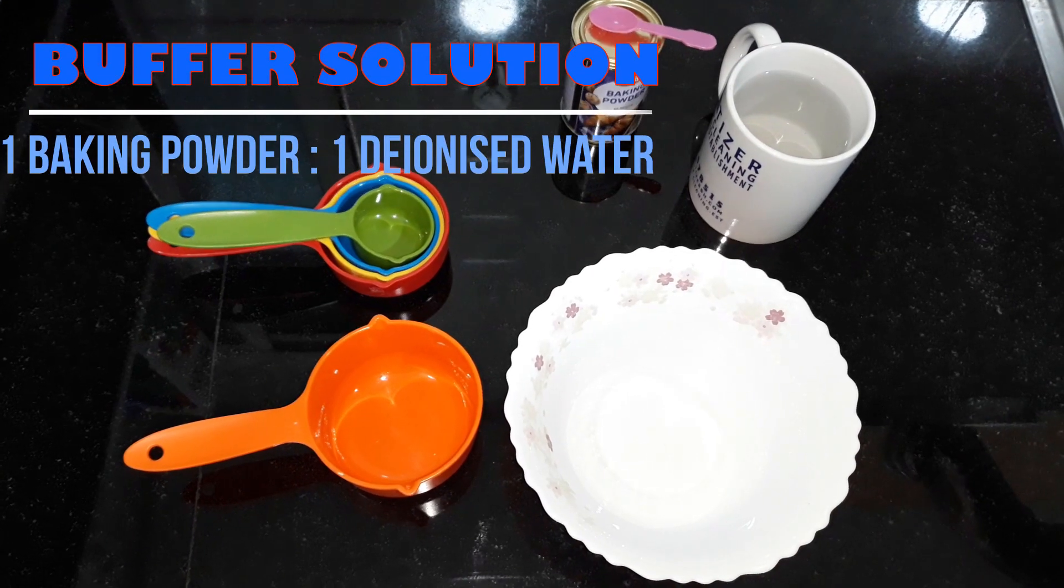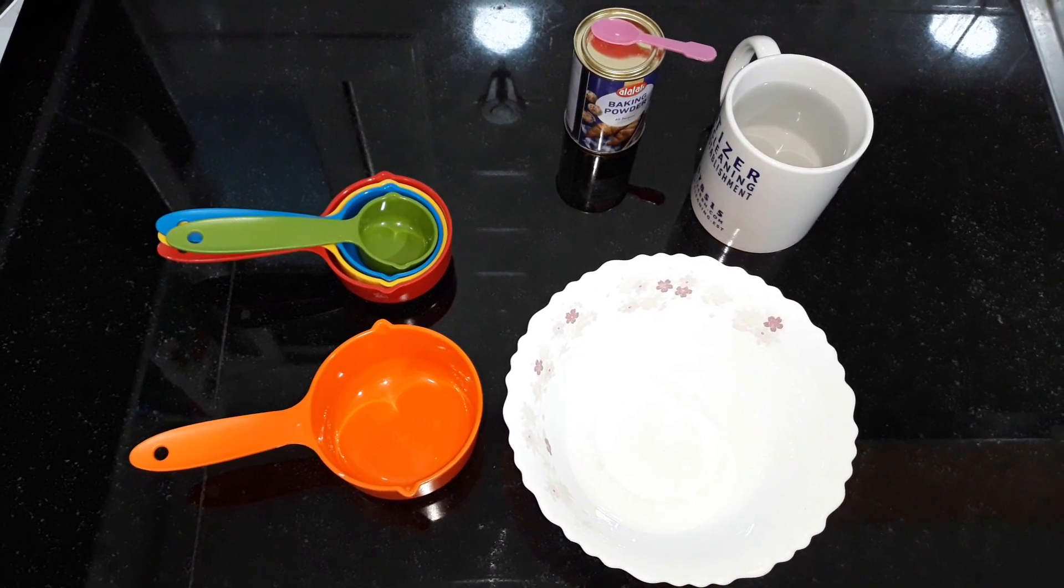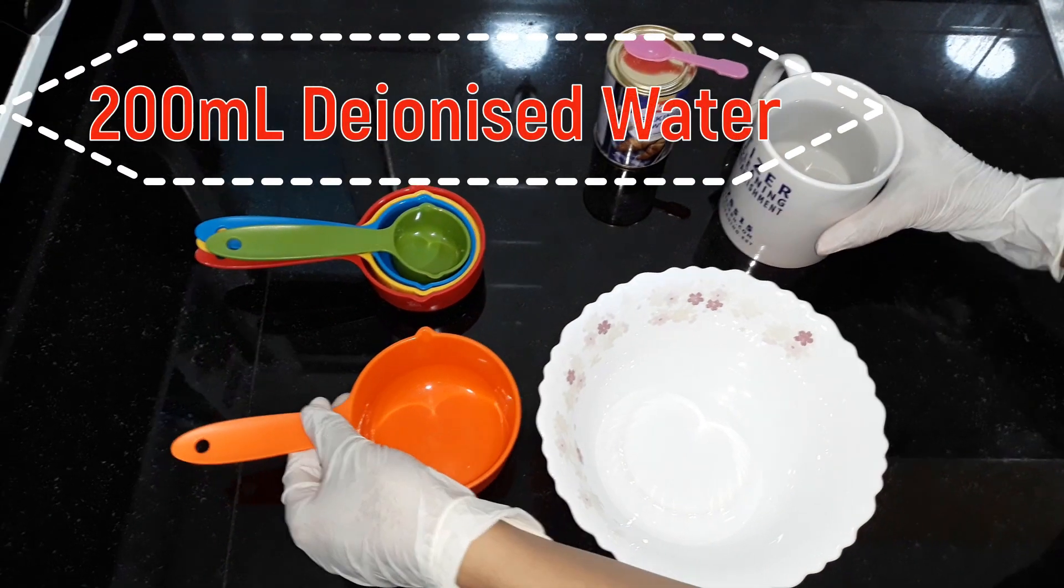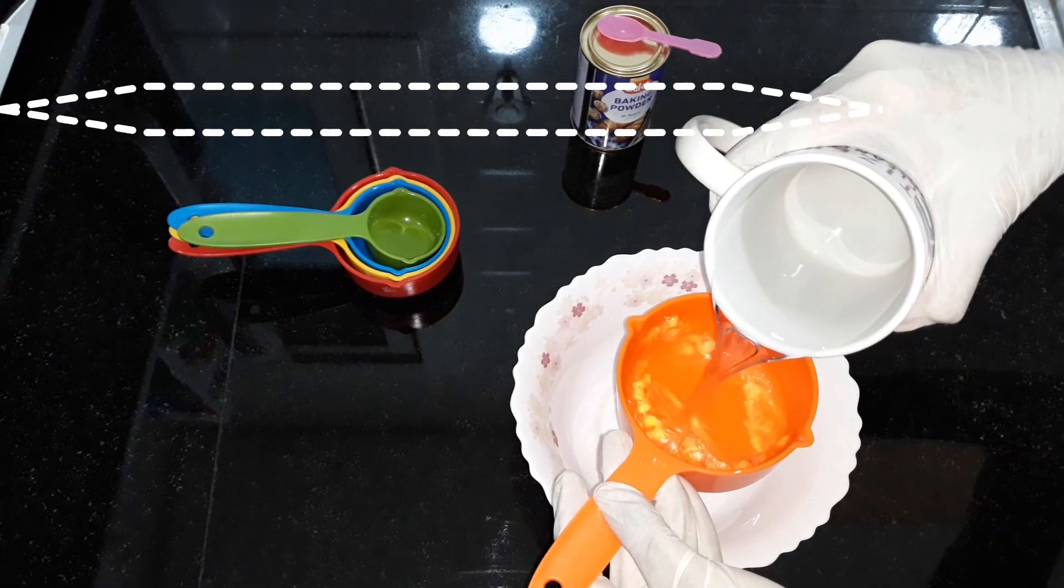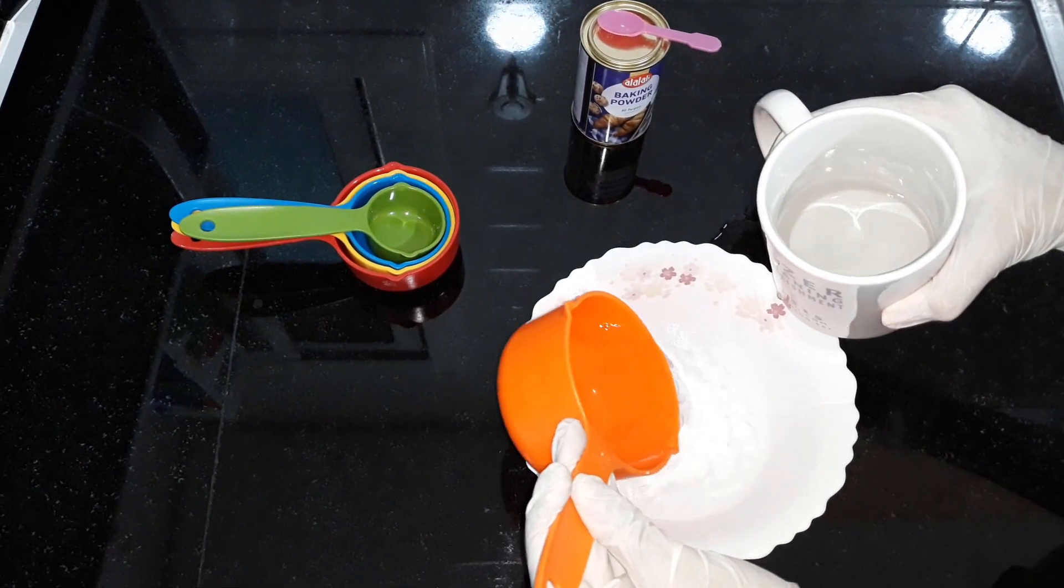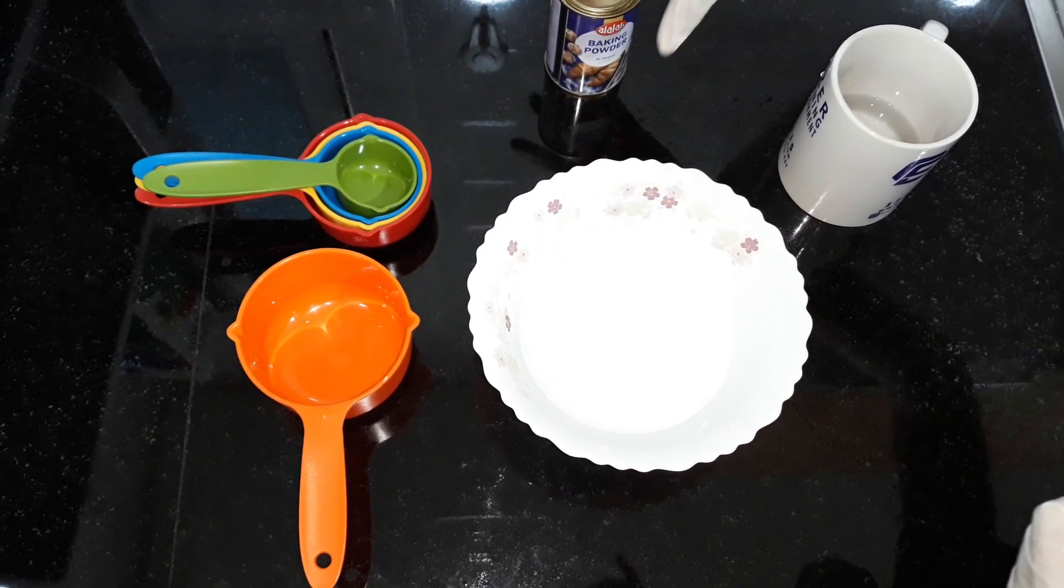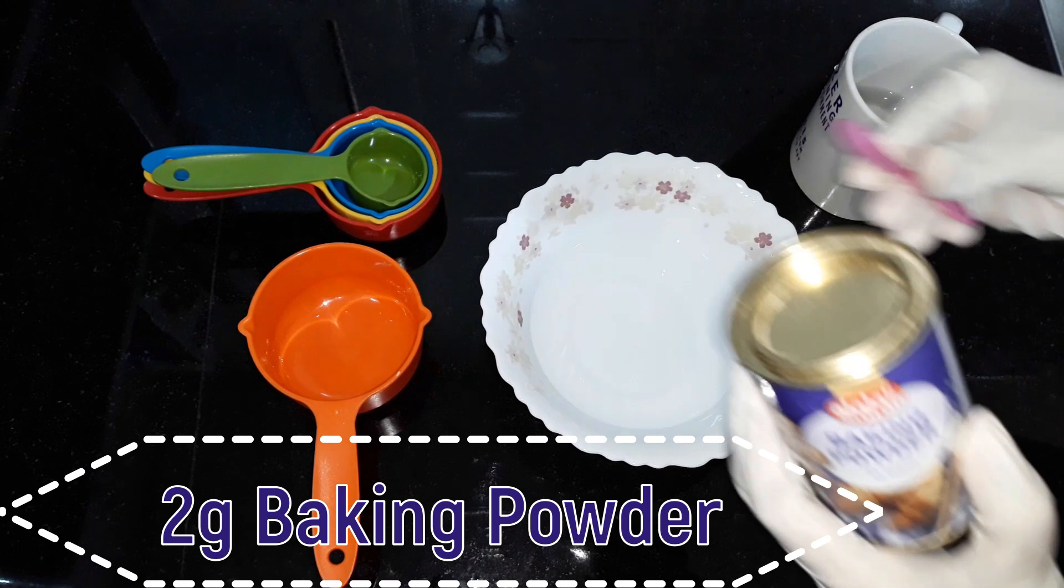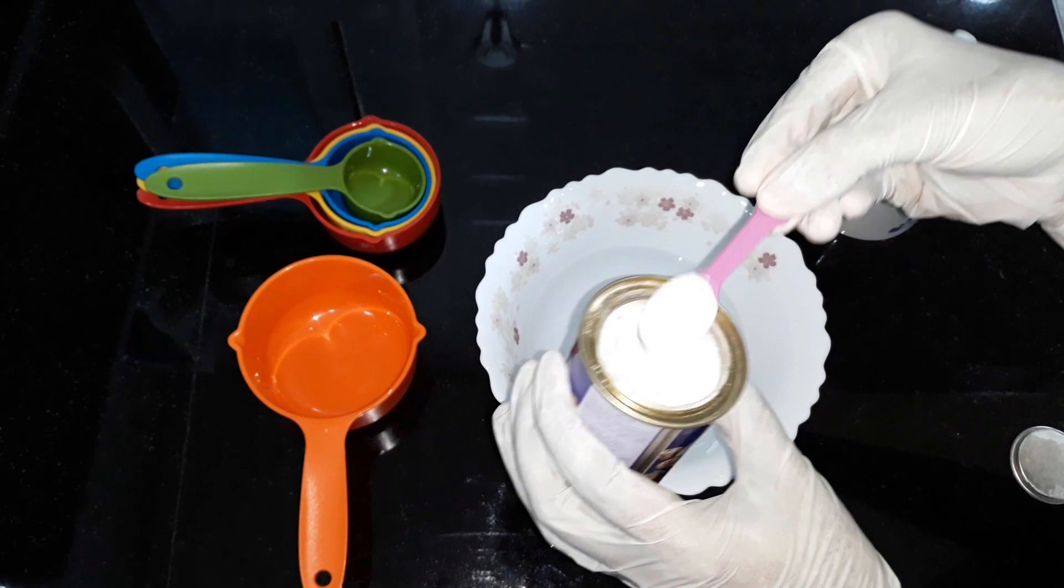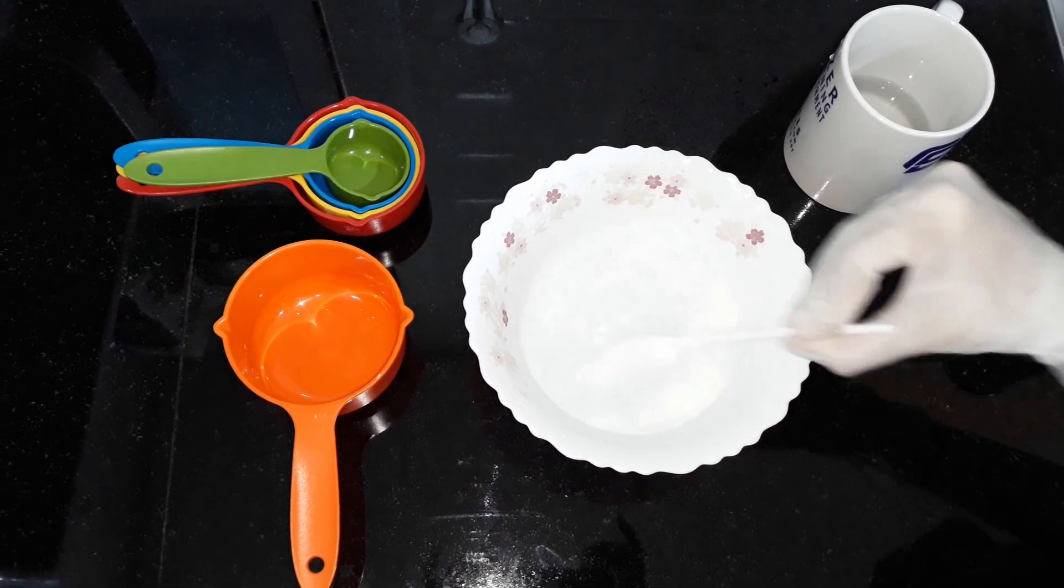First, we are going to prepare our buffer solution which consists of baking powder and deionized water in the ratio 1 is to 1. Following the ratio, we add 200 ml of deionized water into our mixing bowl. Next, we add 2 grams of baking powder, approximately half a teaspoon. We have to mix this solution well.